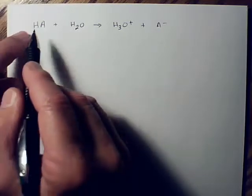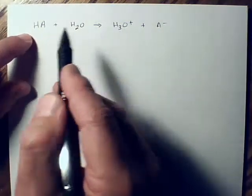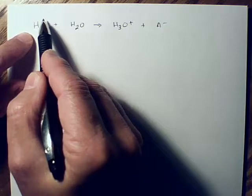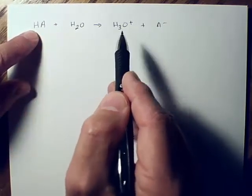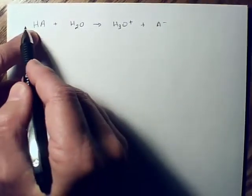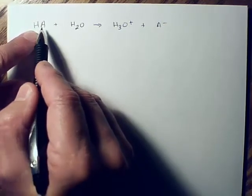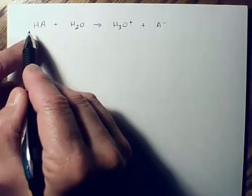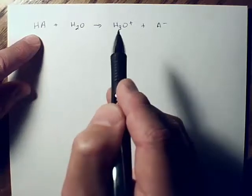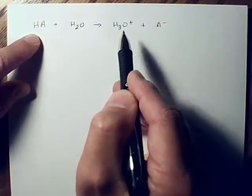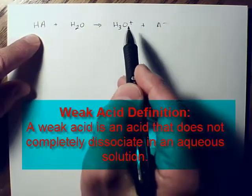Well, if it's a weak acid, then not all of this becomes this. So just because we calculate the molar concentration of this, it won't tell us what this is. This will always be less than that. For strong acids, strong monoprotic acids, the concentration you calculate for the acid will be the concentration you get for the hydronium, but not for weak acids.